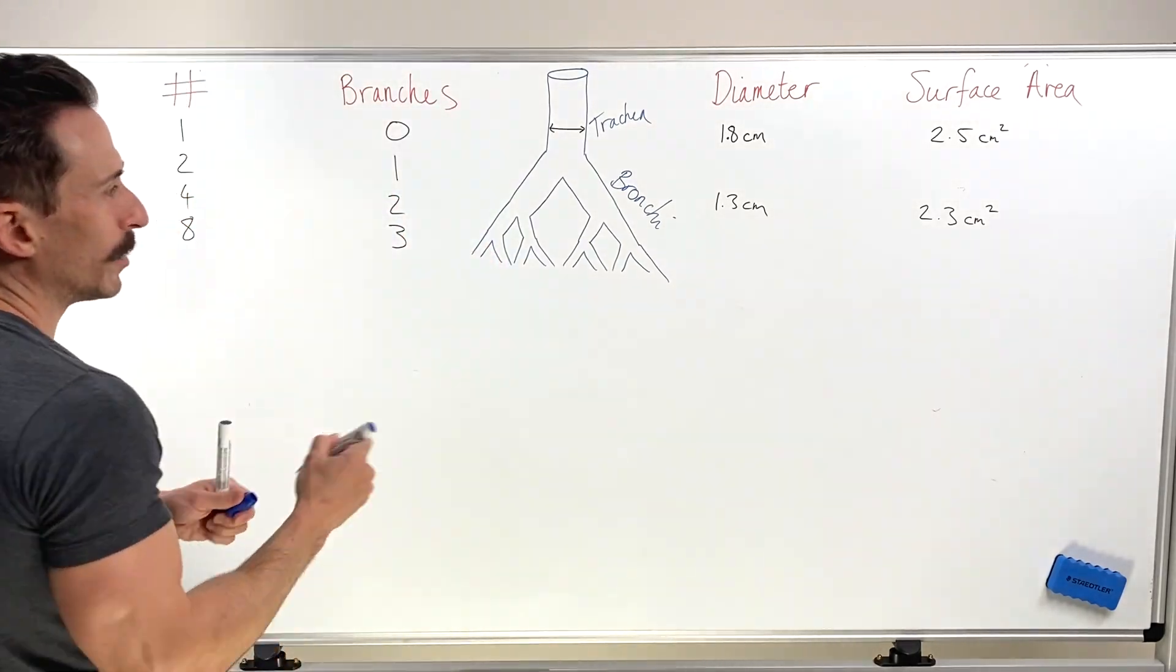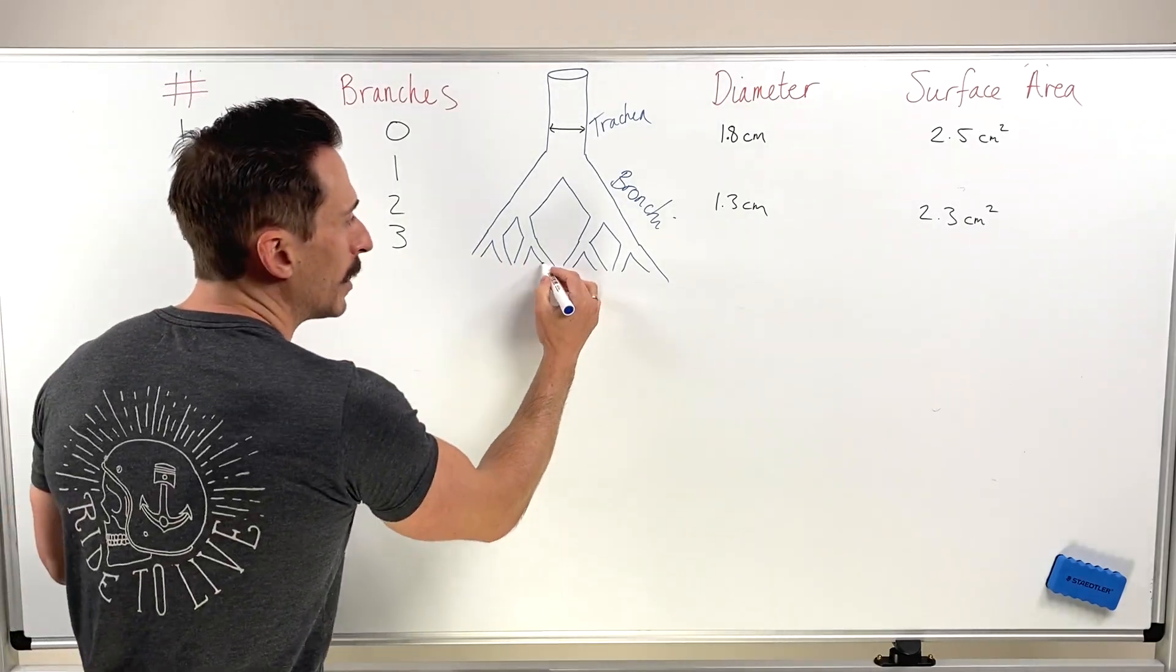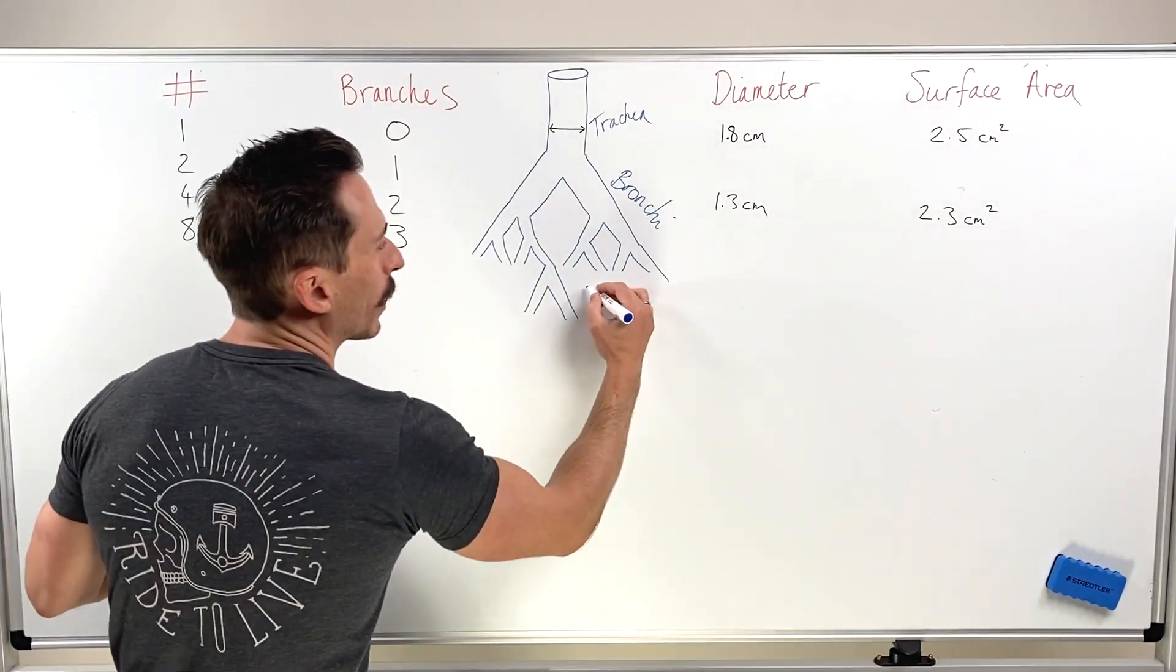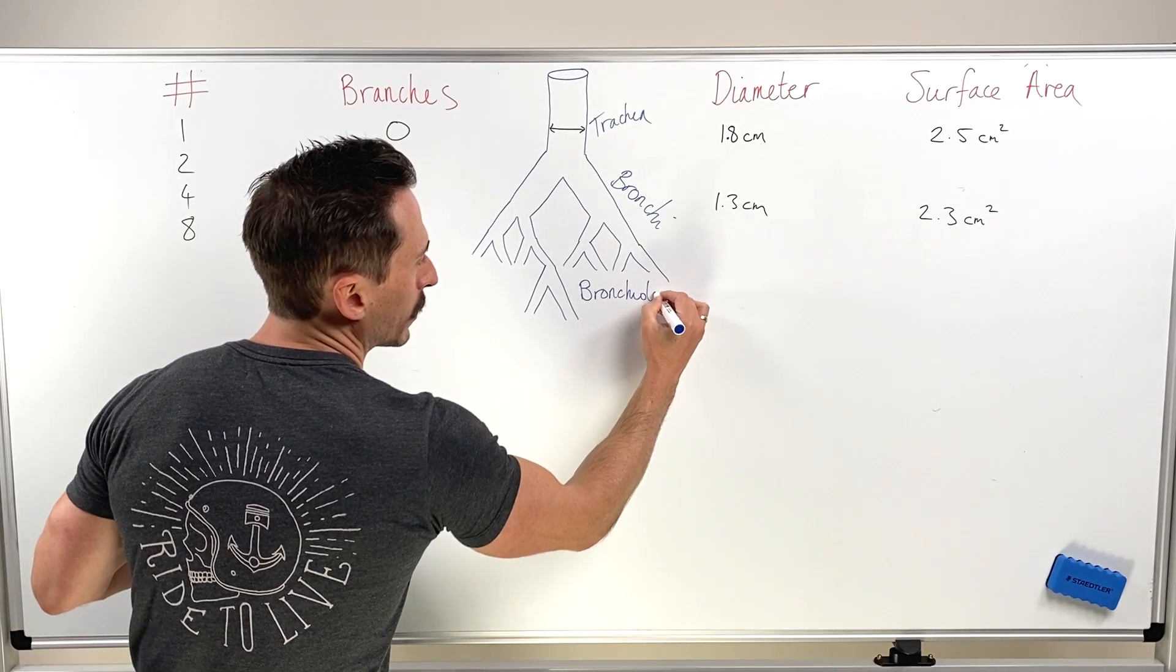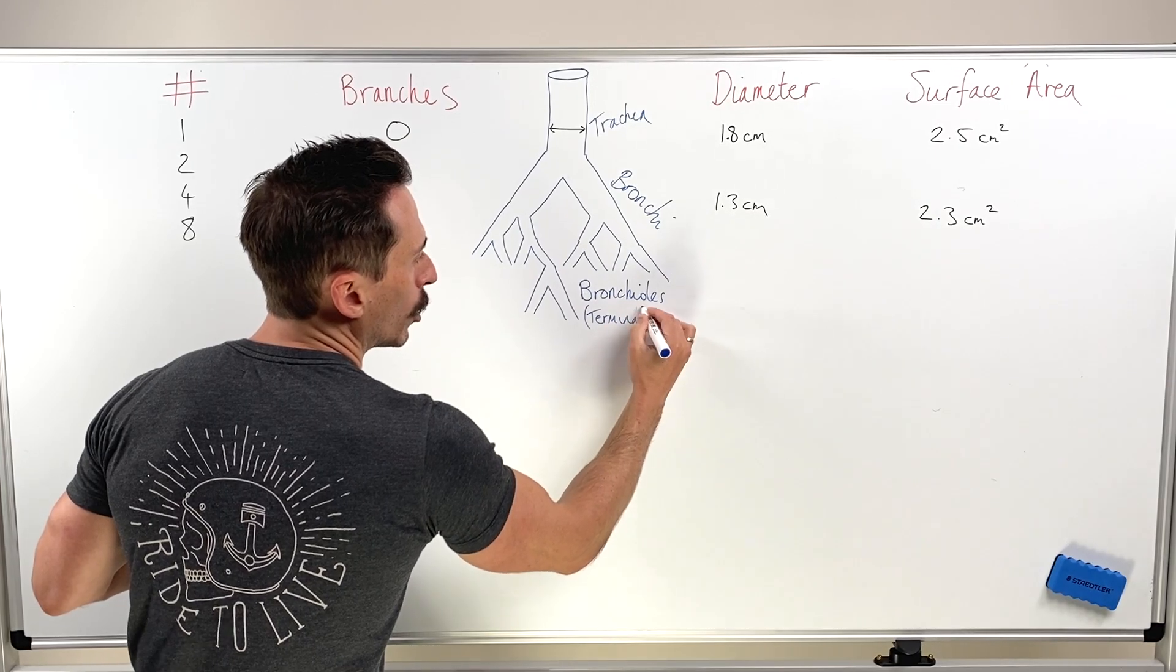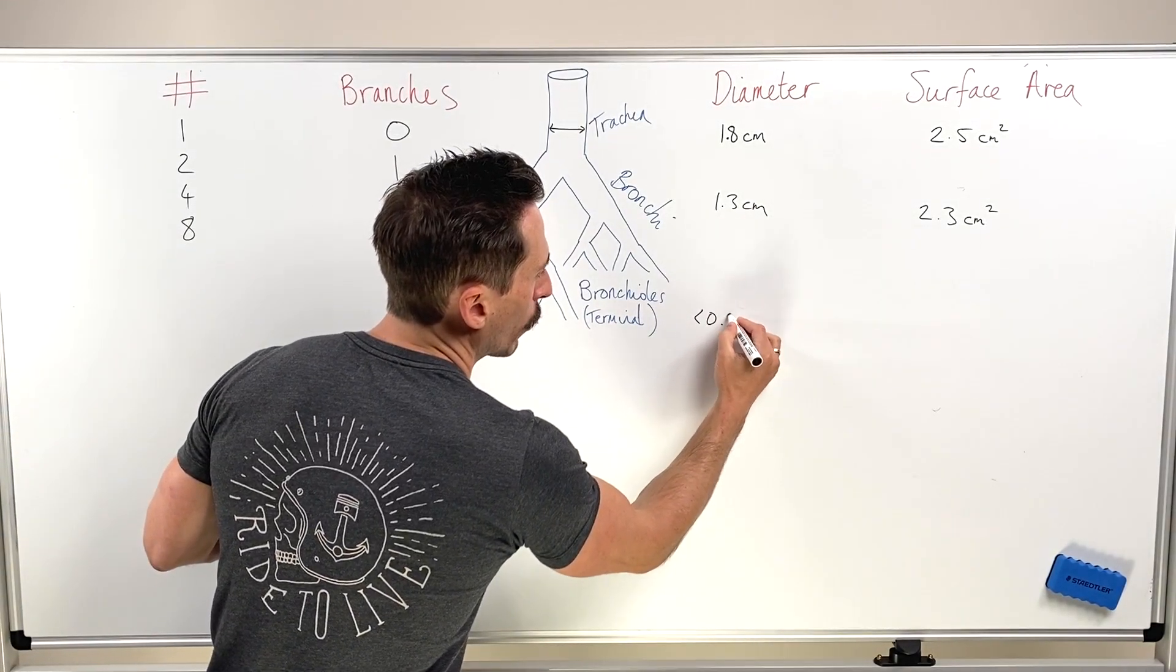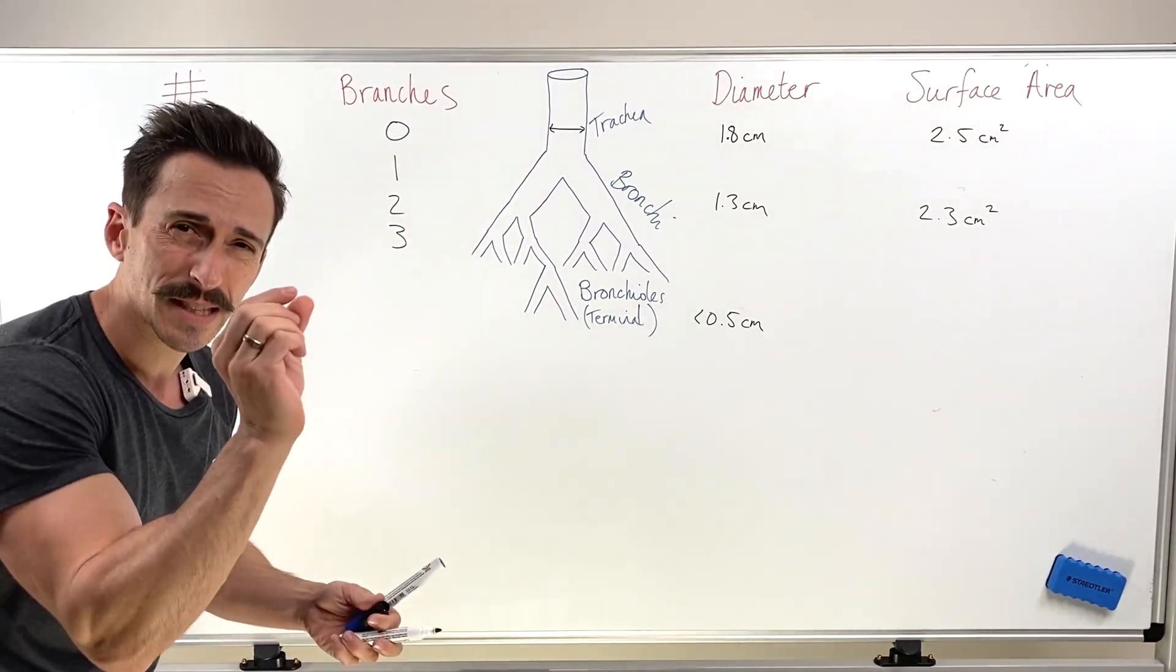Now we're going to be moving through. Now remember, each of these bronchi are going to have branches, but we're just going to focus on one because we won't have enough room. Now what this is, is what we call our bronchioles, which literally means smaller bronchi. Now these bronchioles turn into ultimately what we call terminal bronchioles. Now the terminal bronchioles, by definition, their diameter has to be less than 0.5 centimeters. So that's half a centimeter in diameter.